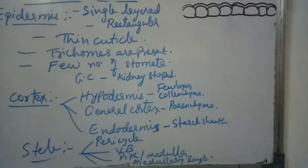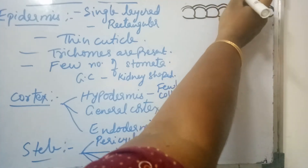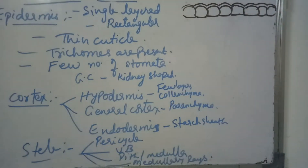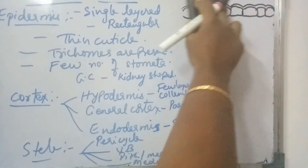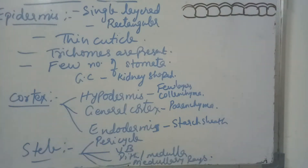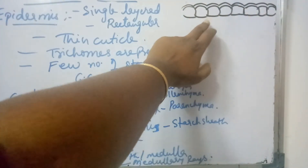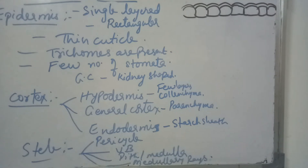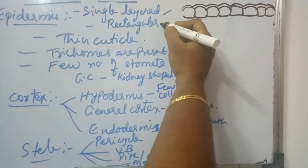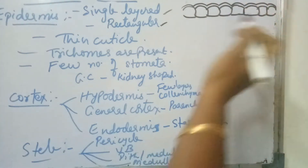As it is a dicot stem, a thin layer of cuticle is very important to reduce loss of water by transpiration. So a thin layer of cuticle is present covering the epidermis. Epidermis is single layered, made up of rectangular shaped cells arranged compactly without any intercellular spaces, and covered by a thin cuticle.